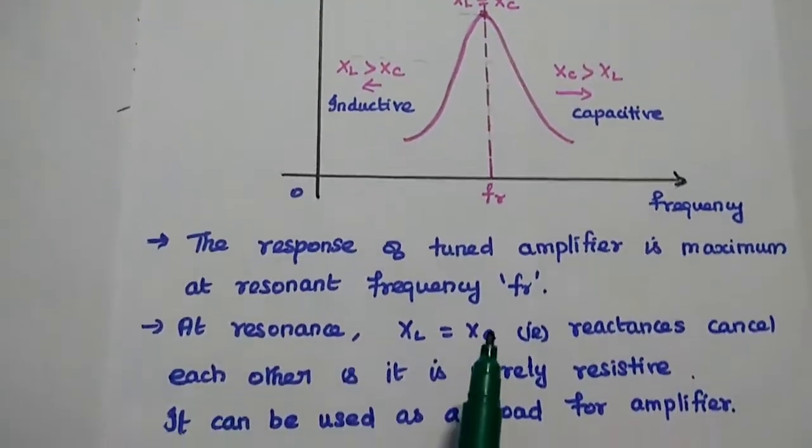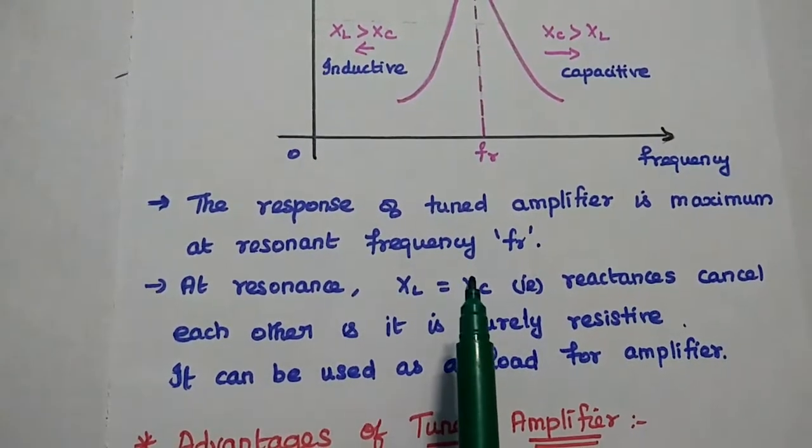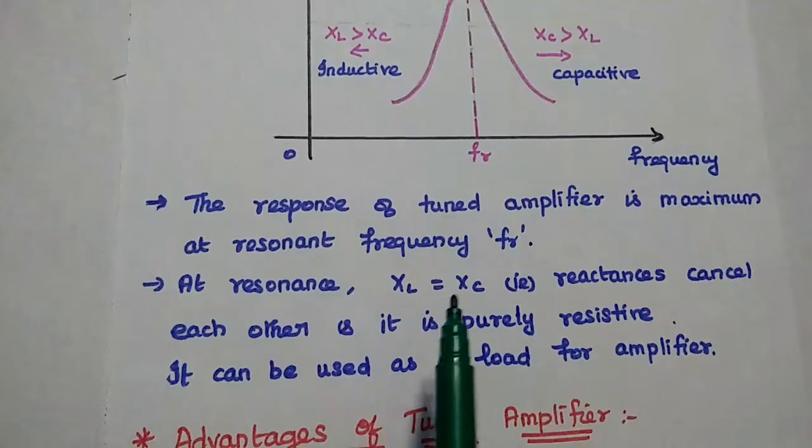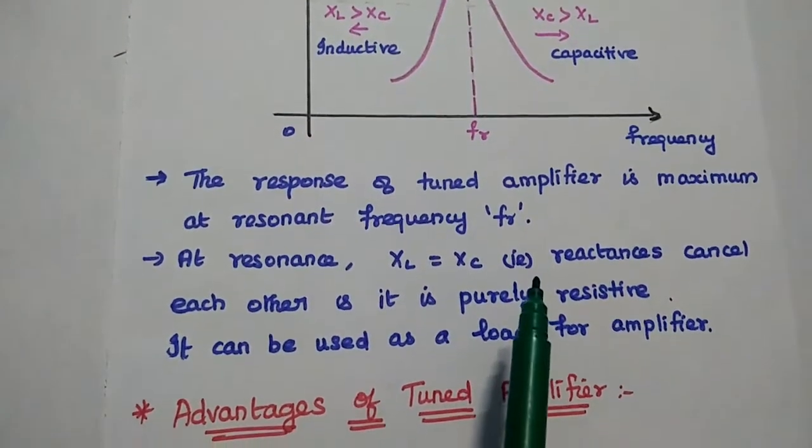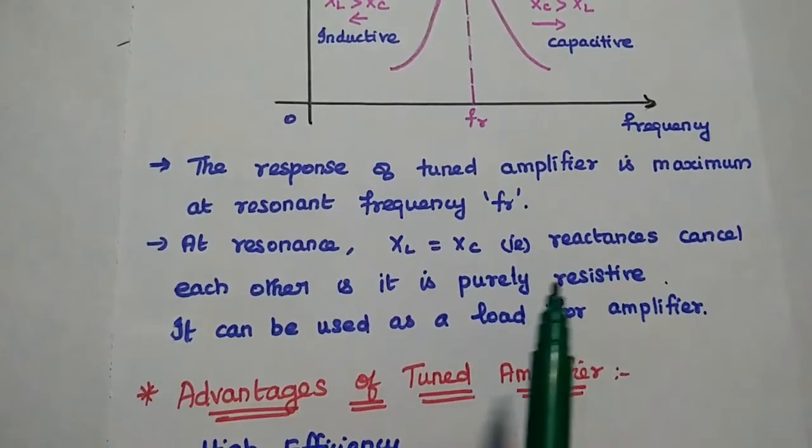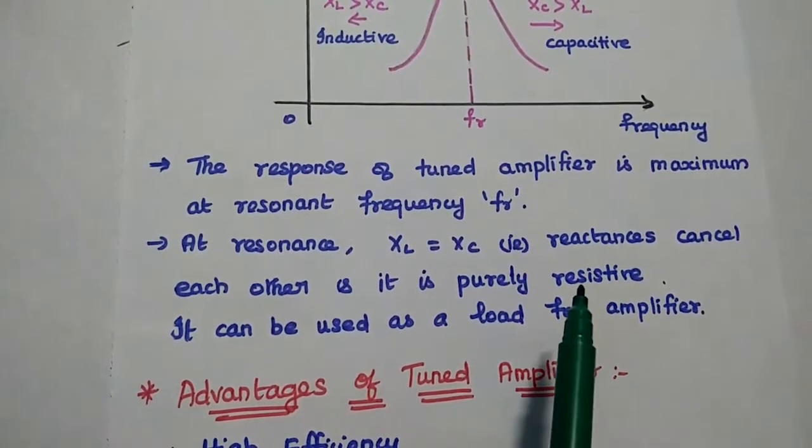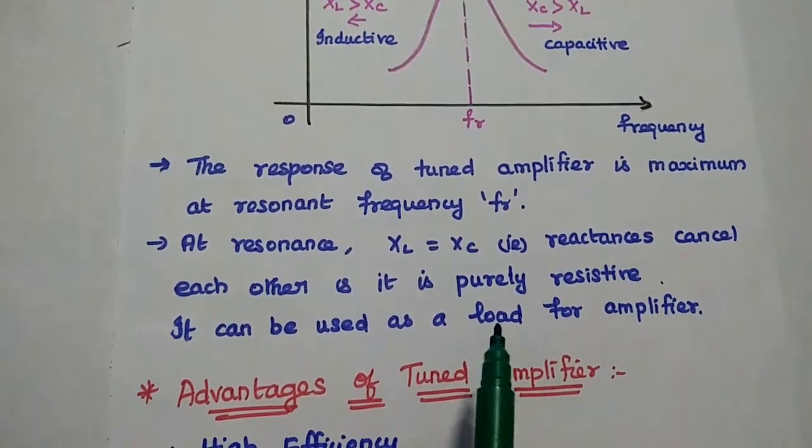The response of your tuned amplifier is maximum at resonant frequency condition. At this point, XL is equal to XC, that is reactances cancel each other and the tuned circuit is purely resistive. So purely resistive means it provides high impedance to get the maximum output.